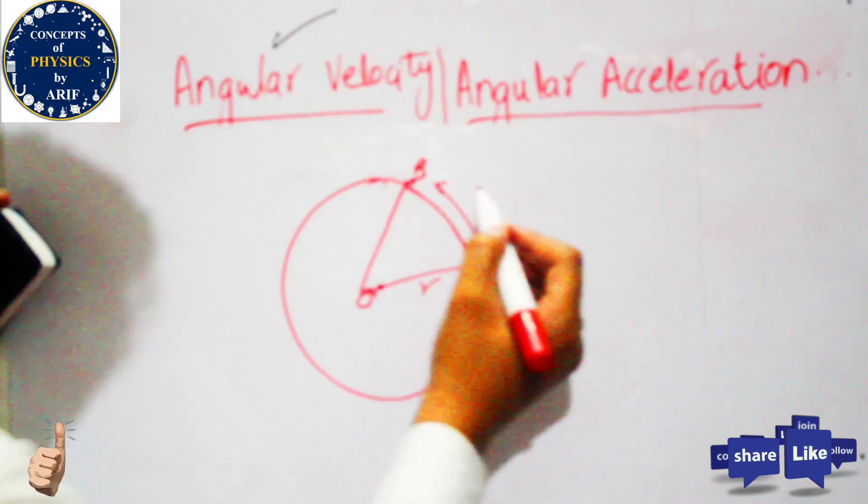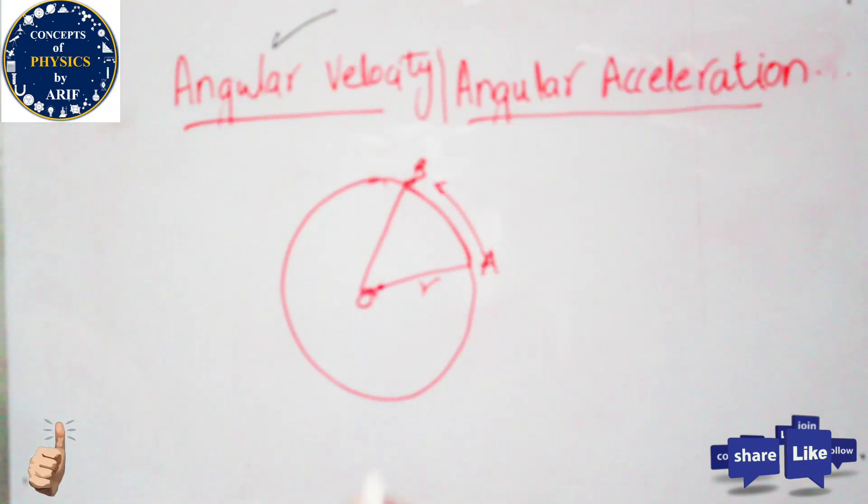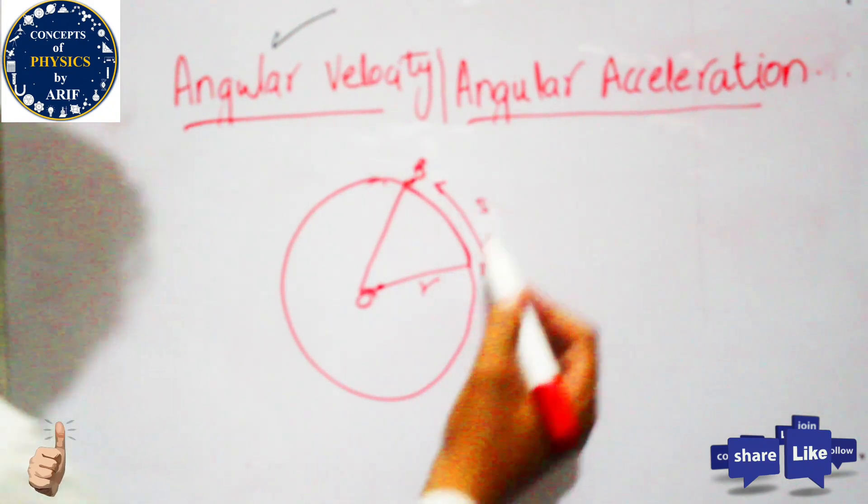this is the circular path. The path covered by the body from point A to B is known as S, also called arc length.